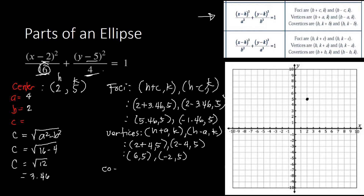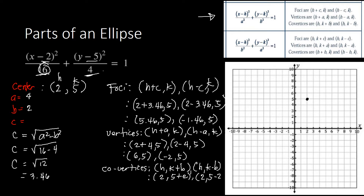Now for co-vertices, we use h, comma k plus b and h, comma k minus b. Plugging in h equals 2, k equals 5, and b equals 2: we get (2, 5 plus 2) and (2, 5 minus 2), which simplifies to (2, 7) and (2, 3). Those are the different parts of our ellipse.